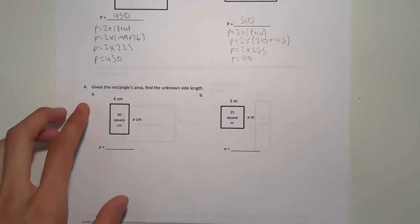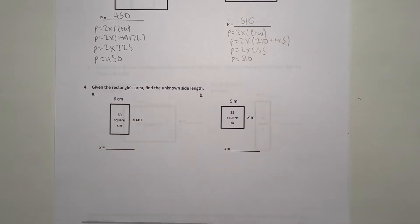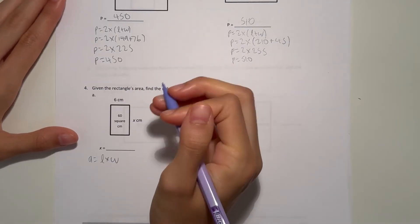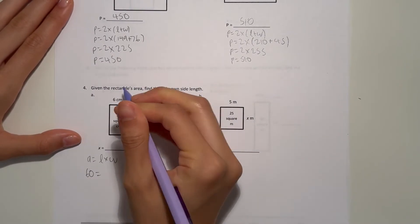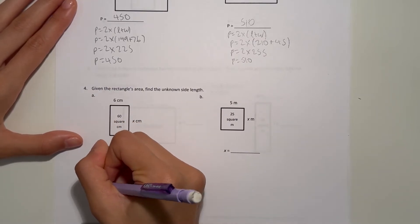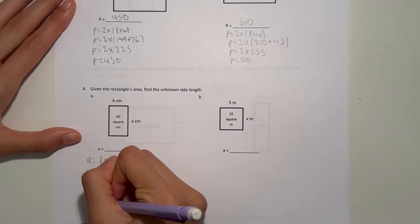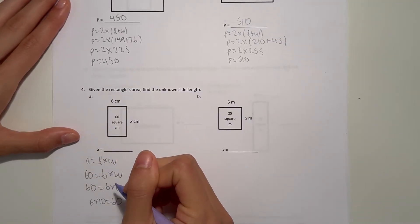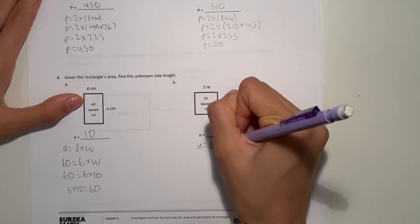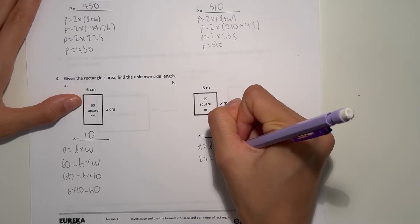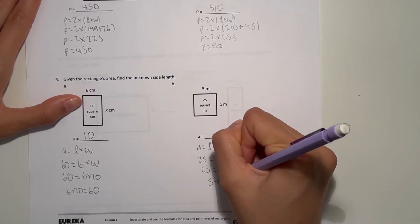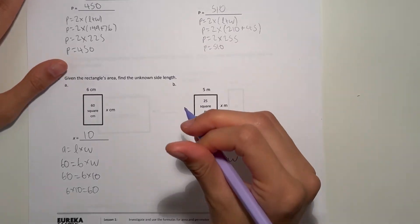Number 4: given the rectangle's area, find the unknown side length. Area equals length times width, and we know our area is 60. So 60 equals 6 times W, and 6 times 10 is 60, so our side length is 10. For B, area equals length times width, our area is 25, and 5 times 5 is 25, so our missing side length is 5.